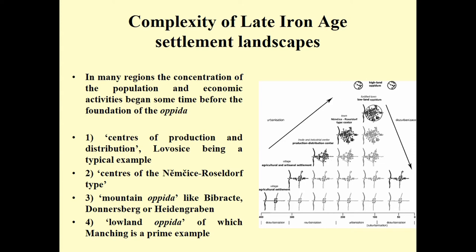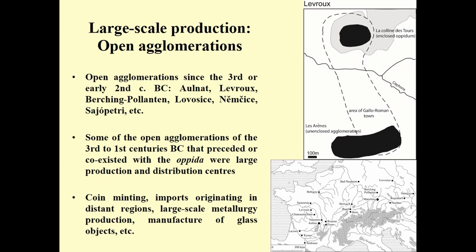For a long time scholars focused mostly on the fortified sites, the Opida, but we now know the situation was much more complex. These processes of concentration of population and economic activities began much earlier than the foundation of the fortified sites. Some scholars have created new categories to acknowledge this diversity. Vladimir Salaj, for example, distinguishes four categories: centers of production and distribution, centers of the Němčice–Roseldorf type — both open — and then among the Opida, mountain Opida and lowland Opida. We have important examples of open agglomerations across the range from Western France to Central Eastern Europe: Orna, Levroux, Berching-Pollanten, Łagosice, Němčice, Sajópetri.